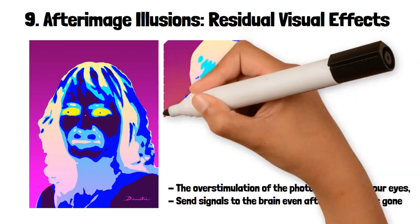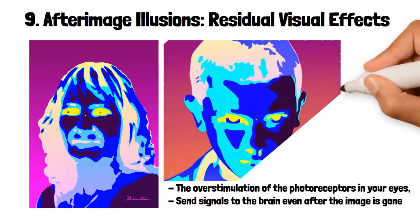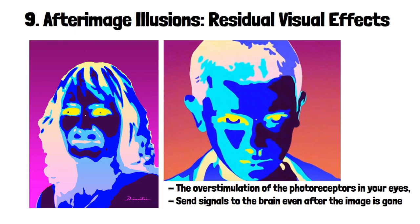A common example is staring at a bright light or a vivid color and then looking at a white surface where you might see a ghost image in complementary colors. This is a result of the photoreceptors in the retina becoming temporarily fatigued.